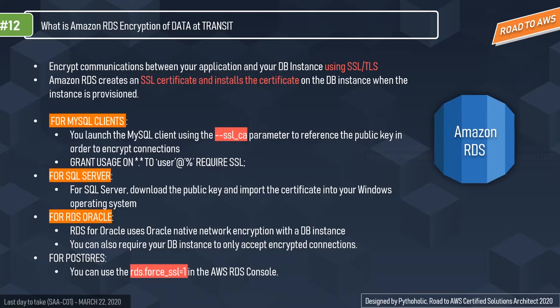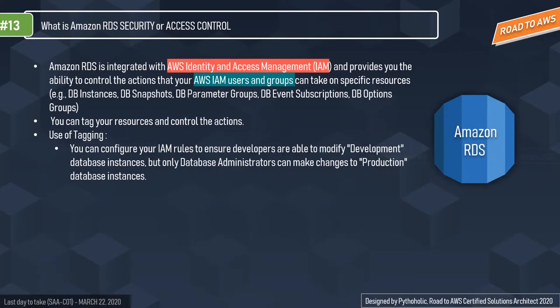A major security point is access control. Amazon RDS is integrated with AWS Identity and Access Management (IAM), giving you the ability to control actions that IAM users and groups can take on specific resources such as DB instances, snapshots, parameter groups, event subscriptions, and option groups. You can tag RDS resources and control actions based on tags. For example, you can configure IAM rules so developers can modify development databases but only administrators can change production databases.